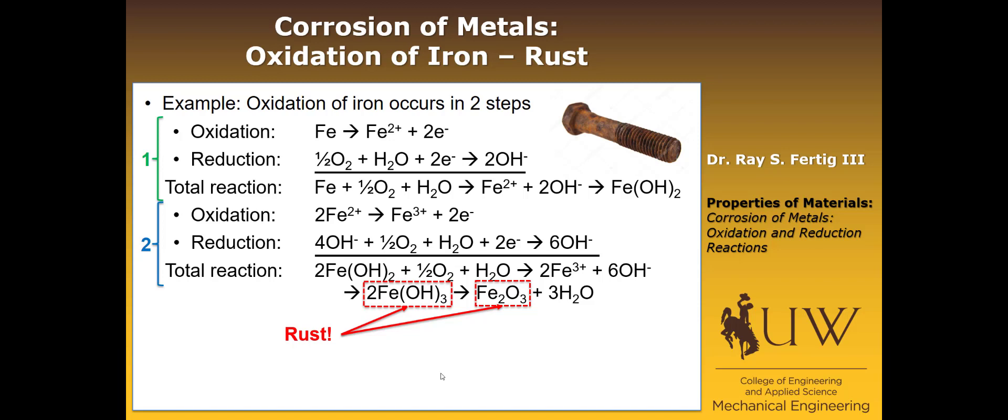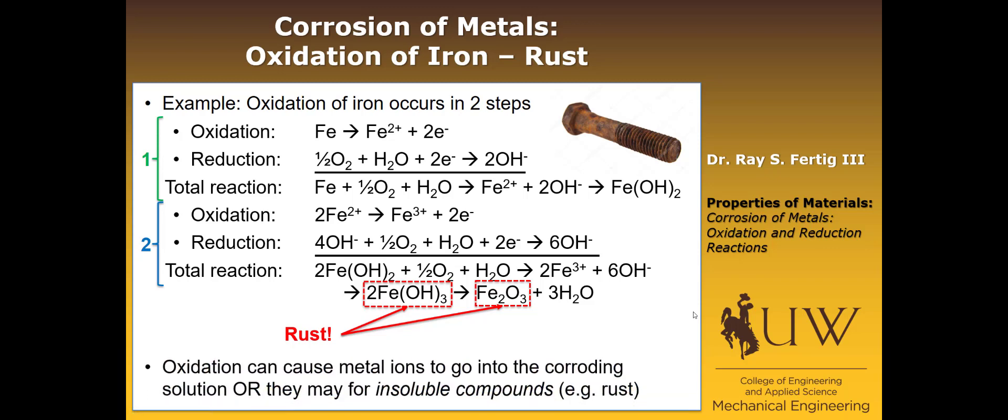The feature, I mean, you don't have to memorize all of these. I'm not going to test you over the specifics of this reaction, but I want you to be aware that this is the reaction of the most common corrosion that we observe, but also that these compounds are formed right here. So we have the iron oxide here, the iron oxide there. So oxidation can cause metal ions to go into the corroding solution, but it also could cause the formation of insoluble compounds, in this case rust. So those are a couple of the options that we have.